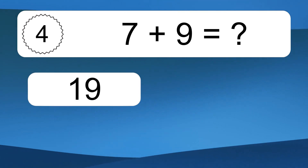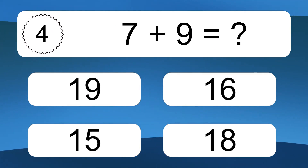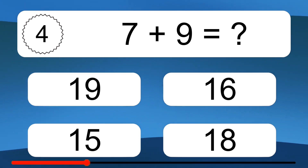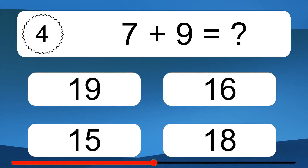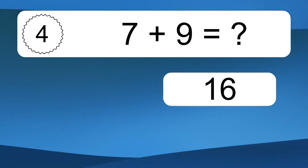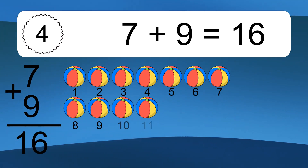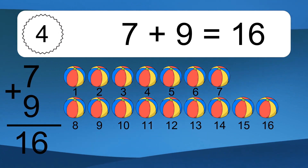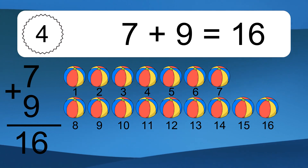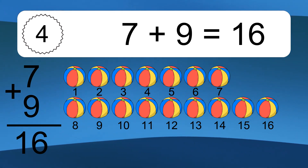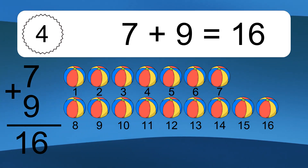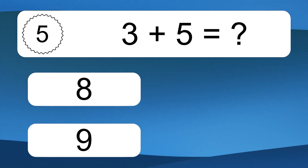7 plus 9 equals what? 7 plus 9 equals 16. Let's count it. 1, 2, 3, 4, 5, 6, 7, 8, 9, 10, 11, 12, 13, 14, 15, 16.